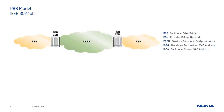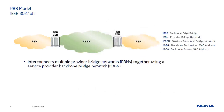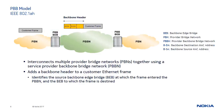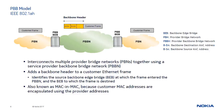PBB is an industry standard method used to interconnect multiple provider bridge networks or PBNs using a Service Provider Backbone Bridge Network or PBBN. To accomplish PBB, a backbone header is added to a customer's Ethernet frame. The header is used to identify the source backbone edge bridge or BEB at which the frame entered the PBB network and the BEB to which the frame is destined. The BEB forwards the frame based on the backbone MAC address, and once the frame reaches the destination BEB, the PBB header is used to identify the service the frame is associated with. Note that PBB is also known as MAC-in-MAC because the customer MAC addresses are effectively encapsulated using the provider addresses.